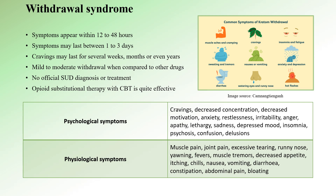Kratom withdrawal symptoms typically emerge within 12 to 48 hours after stopping its use, due to the relatively long biological half-life of mitragynine and 7-hydroxymitragynine. Physical symptoms typically last about 1 to 3 days, while mental symptoms like anxiety can persist for up to a week or longer, and cravings can hang around for weeks, months, or in rare cases even years. Compared to withdrawal from more hardcore drugs like morphine, Kratom withdrawal is generally considered less intense, often categorized as mild to moderate. A combination of opioid substitution therapy and cognitive behavioral therapy seems to help the most with more severe Kratom withdrawals.